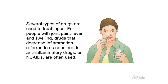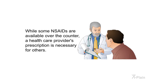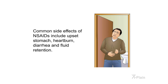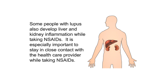Several types of drugs are used to treat lupus. For people with joint pain, fever, and swelling, drugs that decrease inflammation — referred to as non-steroidal anti-inflammatory drugs or NSAIDs — are often used. While some NSAIDs are available over the counter, a healthcare provider's prescription is necessary for others. Common side effects of NSAIDs include upset stomach, heartburn, diarrhea, and fluid retention. Some people with lupus also develop liver and kidney inflammation while taking NSAIDs.